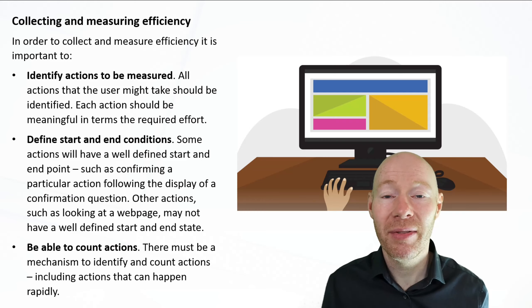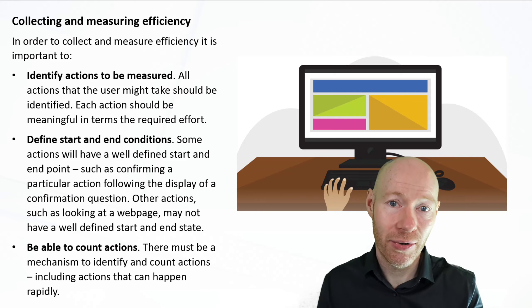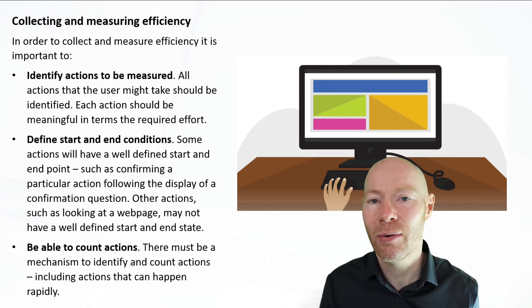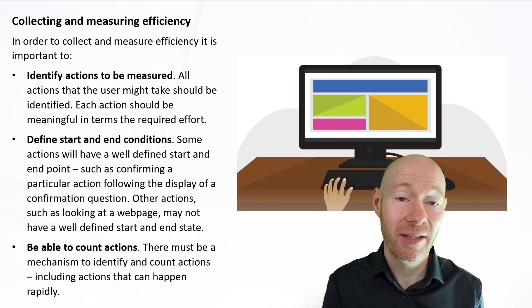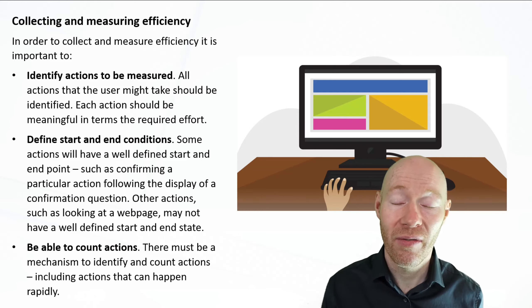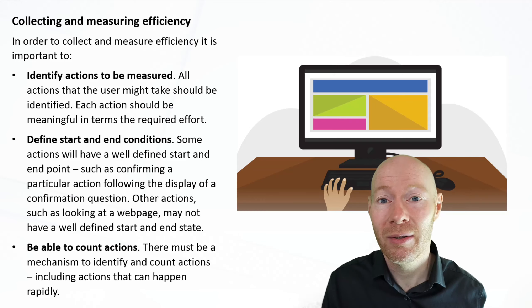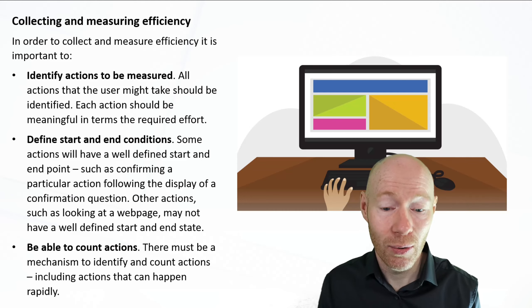And the third key element then is we have some means of being able to count these actions. We have to have a mechanism. That may be an observer, it may be a video, it may be tracking the events that occur through the computer in terms of pushes and clicks and other types of interaction. But we need to have some metric or mechanism then that we can accurately count our number of actions. So quite often there can be a more involved experimental setup here in terms of enabling us to do this.